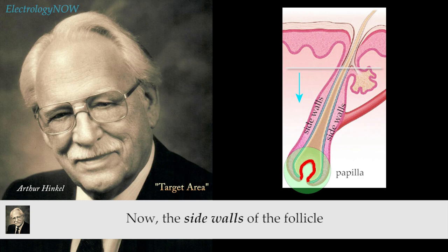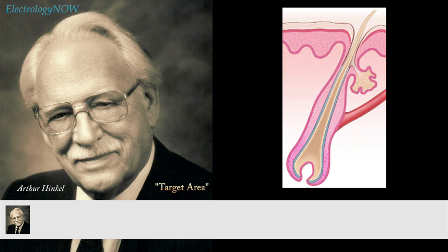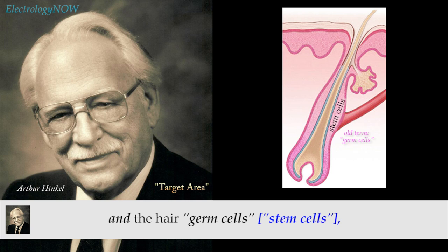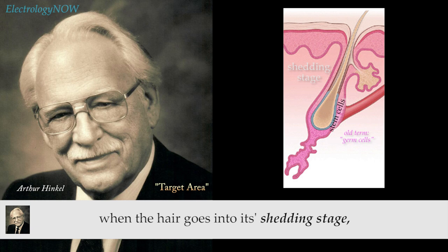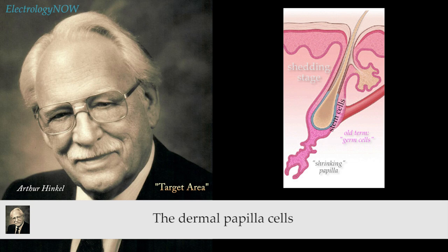The other portions of the follicle are the sidewalls of the follicle. The sidewalls are the area wherein, during the shedding process, the hair germ cells remain. The dermal papilla cells and the hair germ cells can be a little confusing. According to Montagna's book, when the hair goes into its shedding stage, the dermal papilla shrinks away to nothing.